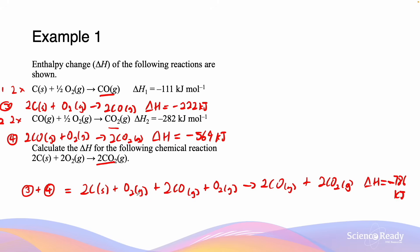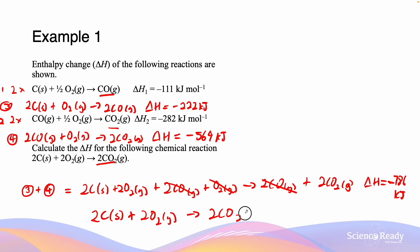To verify, we check the species in the combined equation. Since carbon monoxide appears on both sides, it cancels out. We have two oxygens on the reactant side, so we simplify to get the final equation: 2C + 2O₂ → 2CO₂, with delta H equal to minus 786 kJ. This matches our target equation exactly.